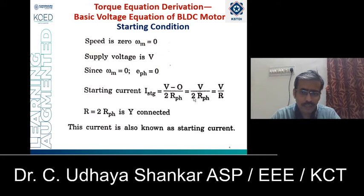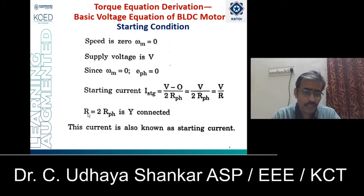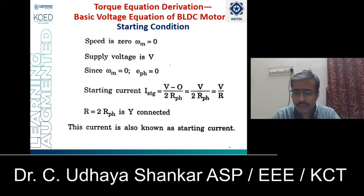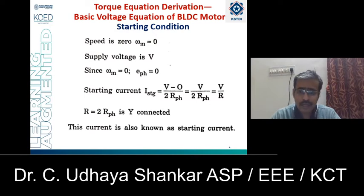This is similar to the basic equation of the conventional DC machine, that is V/R. Here it is 2·R_phase because in a star-connected winding, two different windings are conducting at any time, so the total resistance R = 2·R_phase. This current is called the starting current. To find the starting current of the BLDC motor, you only need the resistance per phase and the supply voltage.